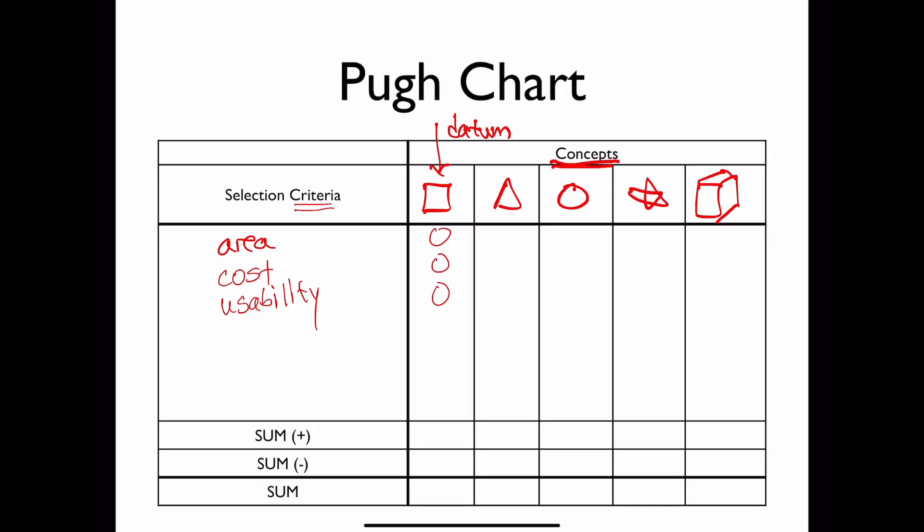And what we do is, is we compare all of these concepts relative to the datum using our criteria. And since our datum is our base level, it gets a score of zero for each of these things, because it's our base object. And then what we do is, is we go to each of the concepts and compare that concept against our datum. So if I come to the triangle here, and I say, how is the triangle relative to the square in terms of area? And so maybe it's got a smaller area, and so that's a negative aspect in this design. But then maybe it is cheaper to make or cheaper to use, and so we'll give it a plus one. And then in terms of usability, maybe it's much more usable than the square, and so we'll give it a plus one.